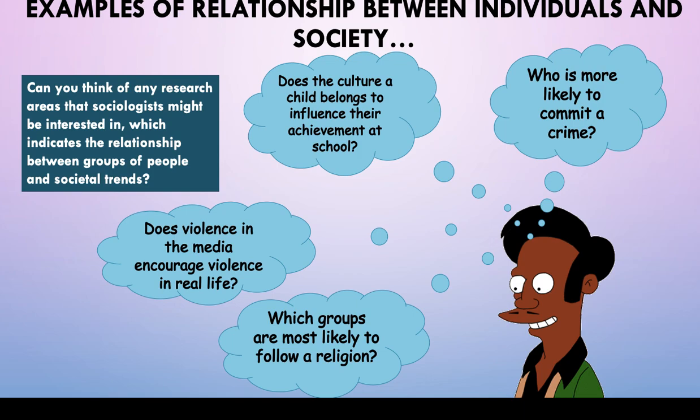Who is more likely to commit a crime? We already know that men are punished more harshly and are probably going to face some sort of consequence, whereas — in terms of the chivalry thesis — women get away with it a lot more, through excuses like being in a rush to get home to a child. Can you think of any research areas that sociologists might be interested in which indicate the relationship between groups of people and societal trends?